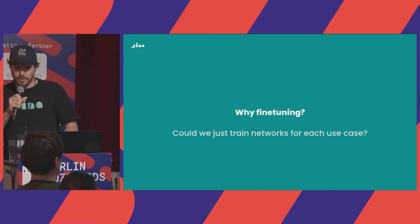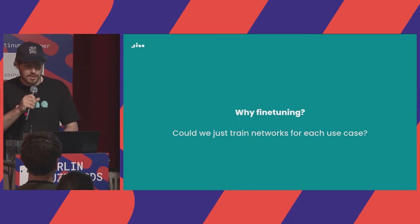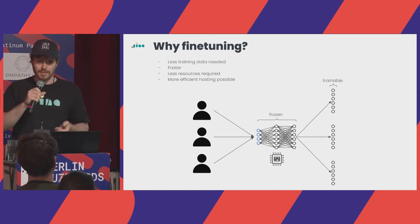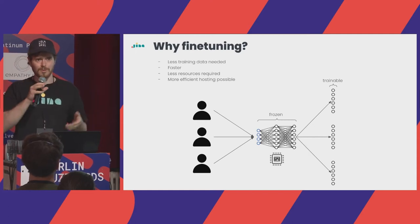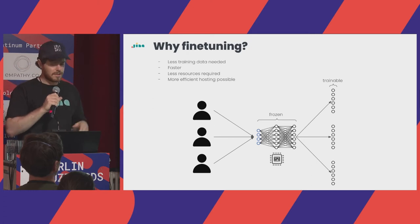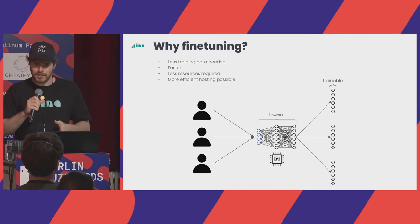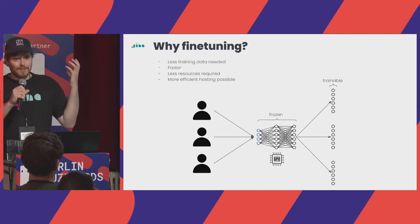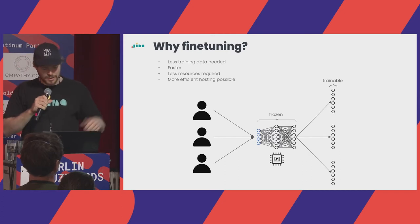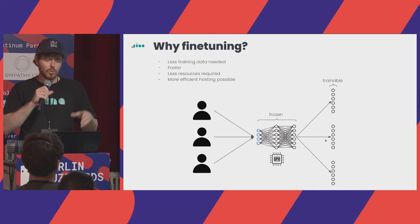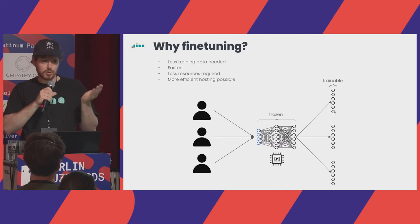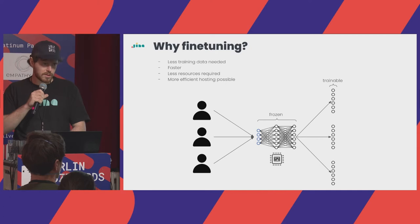Why do we need fine-tuning rather than training a network from scratch for all use cases? There are specific reasons: we need less training data with fine-tuning, since training a full neural network with many parameters from scratch would cause overfitting. It's also faster and requires fewer resources. Additionally, we can make hosting much more efficient — one big network on GPU serves many clients — and what we actually train is a very small multi-layer perceptron, or even just a single layer, for the specific use case.